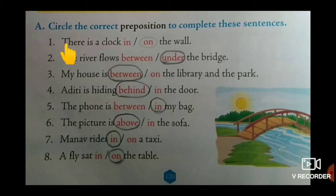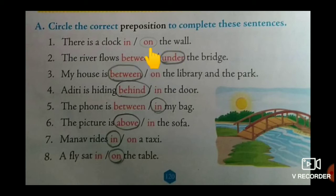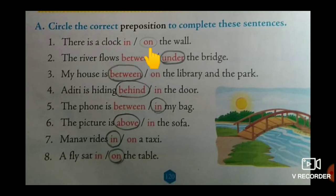First one: there is a clock in or on the wall. Which preposition is suitable? On the wall. Because 'in' means inside — inside the wall is not possible. So, on the wall. 'On' means on the outside surface.